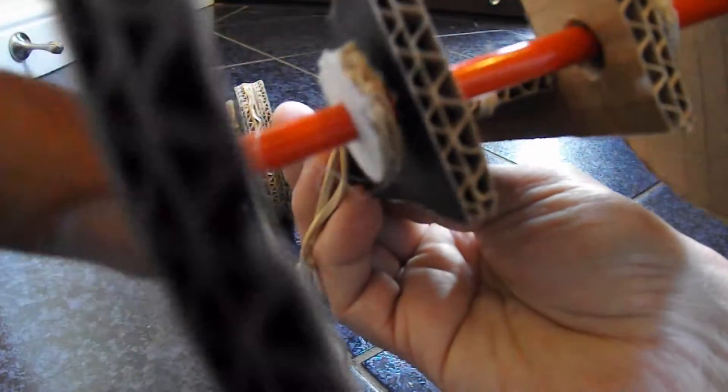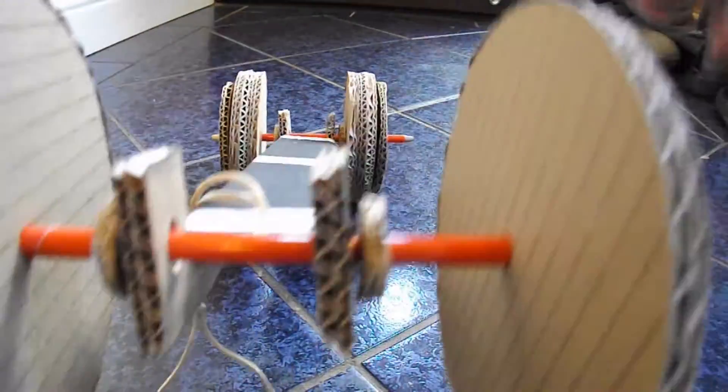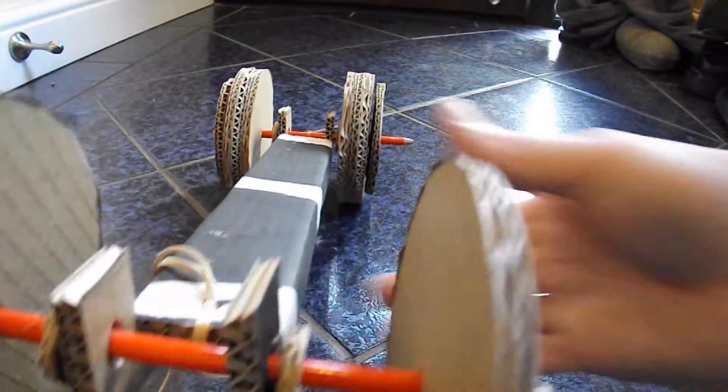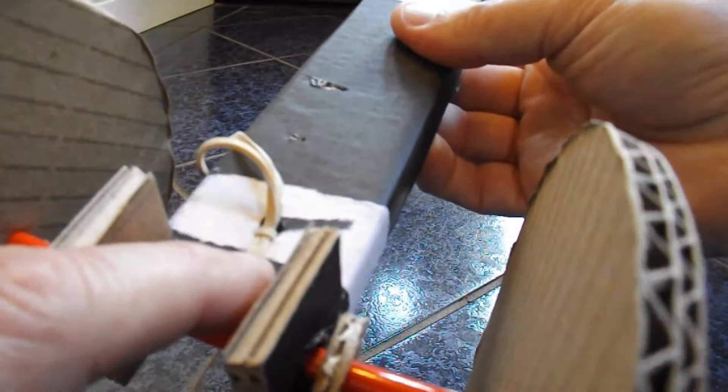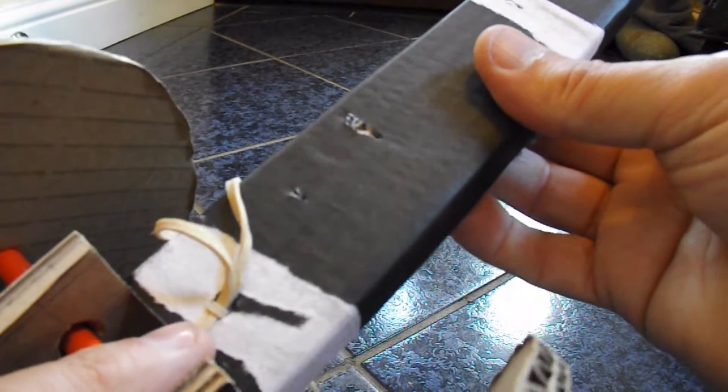Then I've put small cardboard discs either side to hold the axle in place, stop it going backwards and forwards or side to side. The rubber band goes through a small hole in the chassis there and clips onto itself to hold it in place.